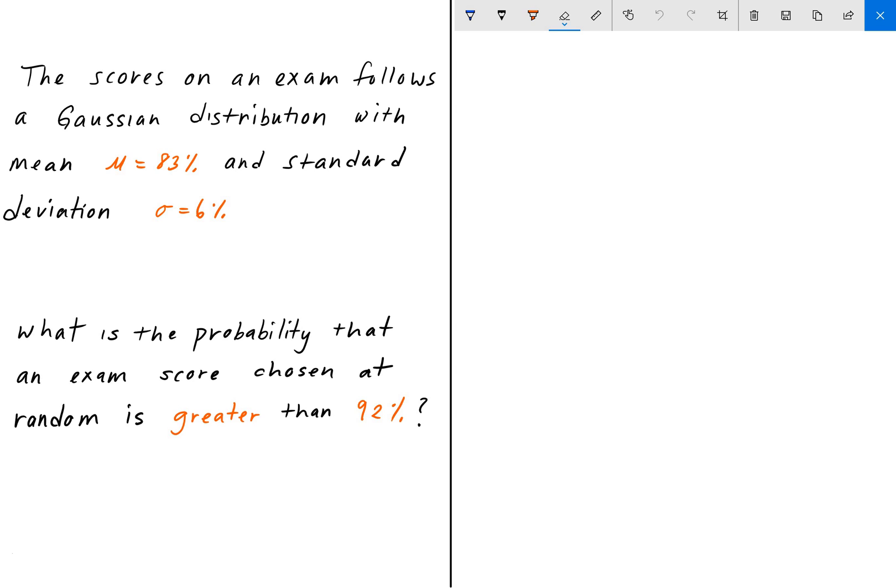With a mean of 83 percent and a standard deviation of 6 percent, we are looking for the probability that an exam score chosen at random is greater than 92 percent. So as always, pause the video, give it a shot, and we'll go over the answer in a bit.